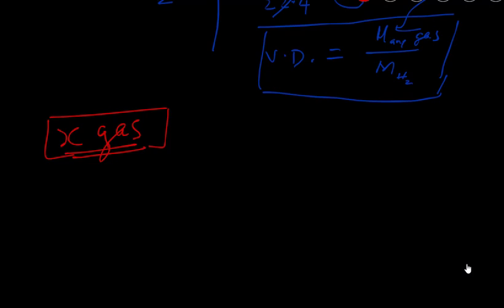What you do is take a specific volume of this unknown gas — call it V₁ — at STP (standard temperature and pressure). You take that specific volume and weigh it. You do the same for hydrogen gas at the same conditions.